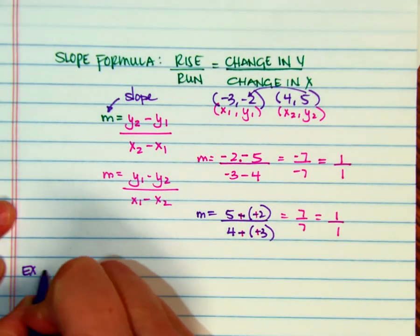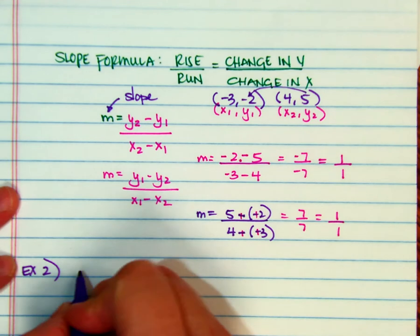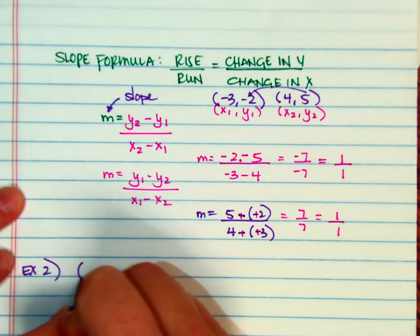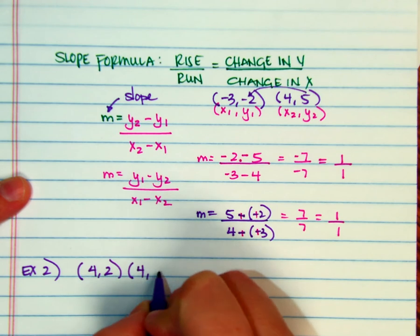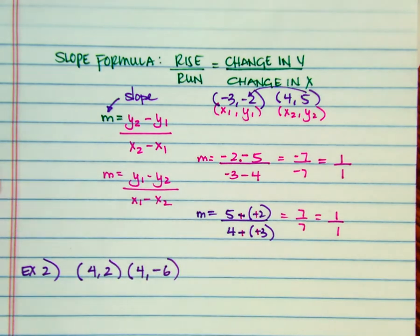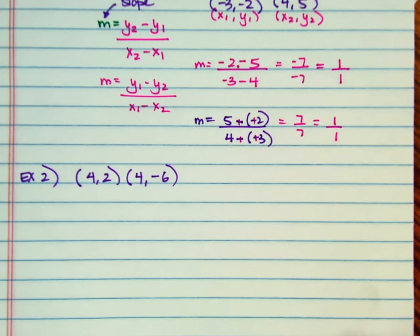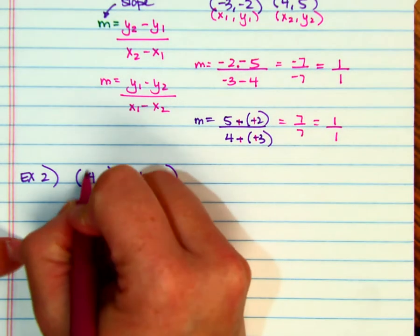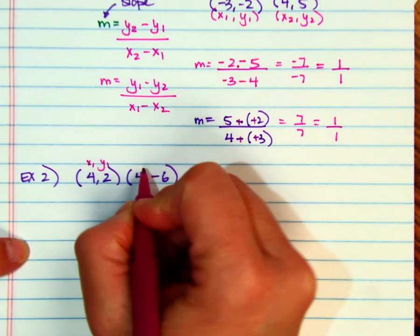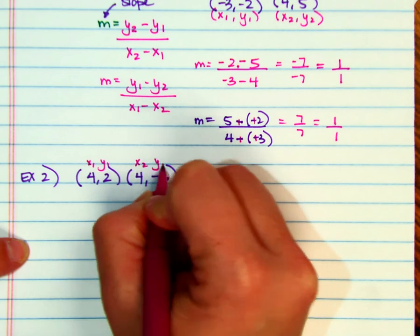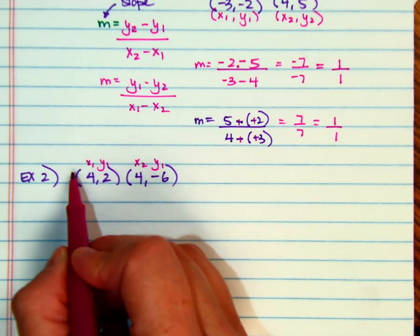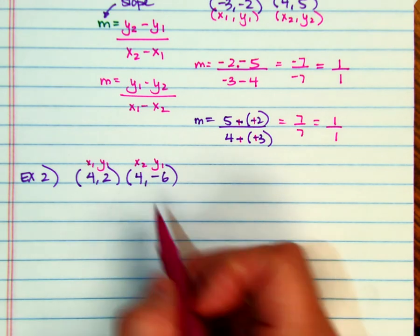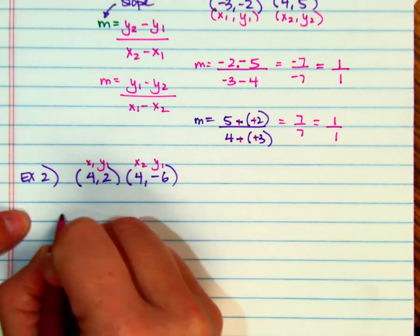So let's do a couple more examples. Example 2, I'm going to give you the point of 4, 2, and another point of 4, negative 6. See how that turns out. So slope, actually, I'm going to get in the habit of labeling these as my sub numbers first. Remember, ordered pairs are always x comma y, so make sure you're not putting both the x's in one ordered pair and then both the y's in another ordered pair.